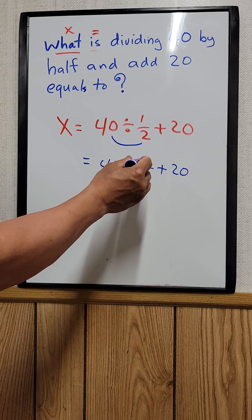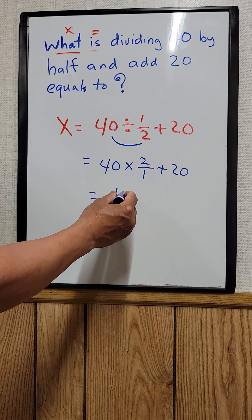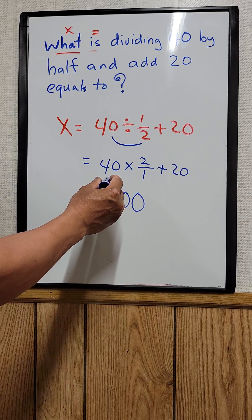So 40 times 2 plus 20, which is equal to 100. That's your answer.